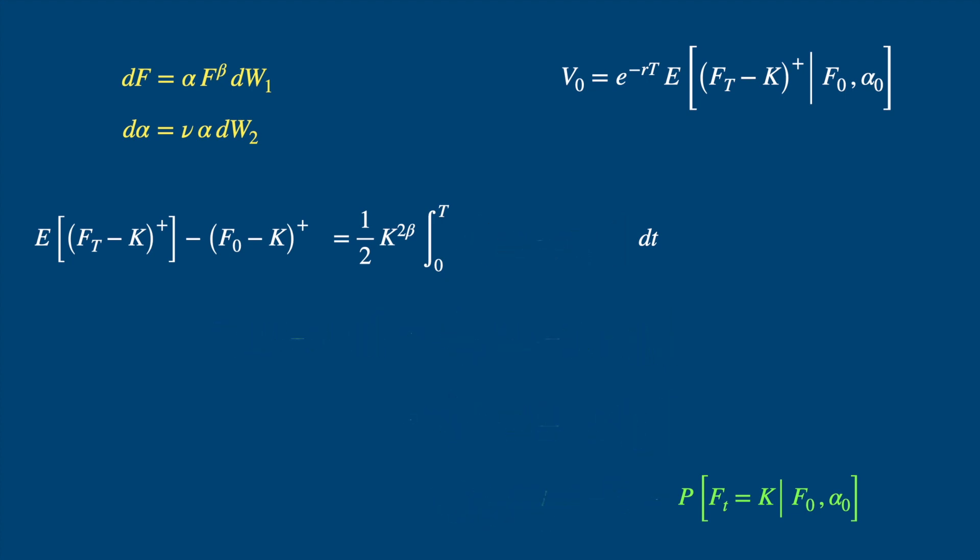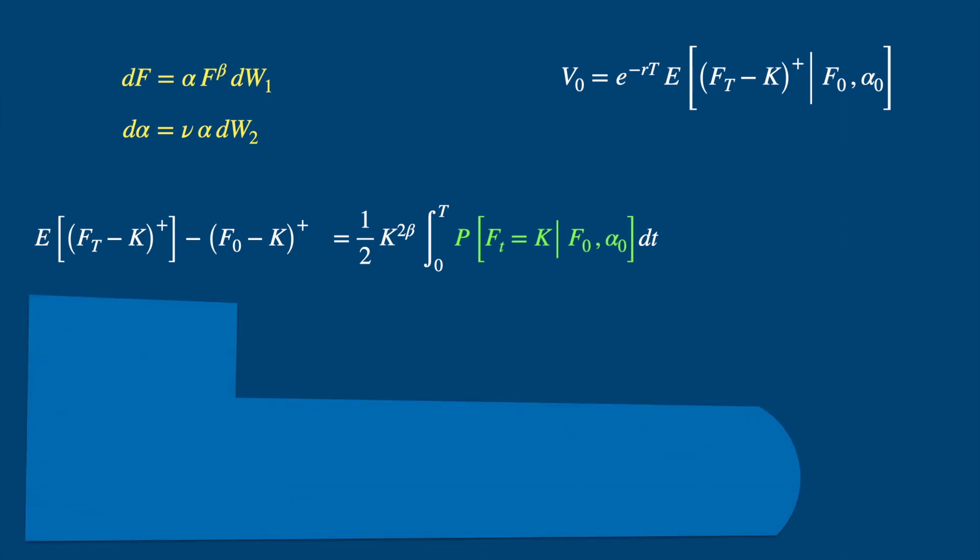Now in terms of the differential equations, there are two backward variables, and hence the backward Kolmogorov equation will be two-dimensional. Remember for the black model where the f follows the driftless geometric Brownian. We saw the backward equation is as follows. Here in place of sigma times f, we have alpha times f to the power beta. So in place of sigma squared times f squared, we will have alpha squared times f to the power 2 times beta.